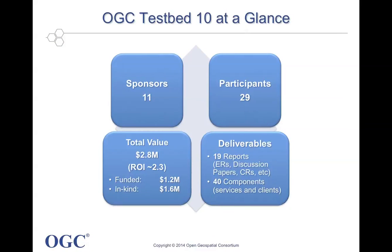Just a few words about OGC Testbed 10 overall. It was made possible with requirements and funding resources provided by 11 different sponsors. Twenty-nine different organizations participated in this testbed to address the sponsor requirements. The total value of this testbed was $2.8 million U.S. — $1.2 million in funding provided by sponsors, combined with an additional $1.6 million in in-kind contributions by participants. The total return on investment was approximately $2.3 million. Deliverables include 19 reports prepared as engineering reports, discussion papers, and change requests, and 40 different software components implemented as services or clients.